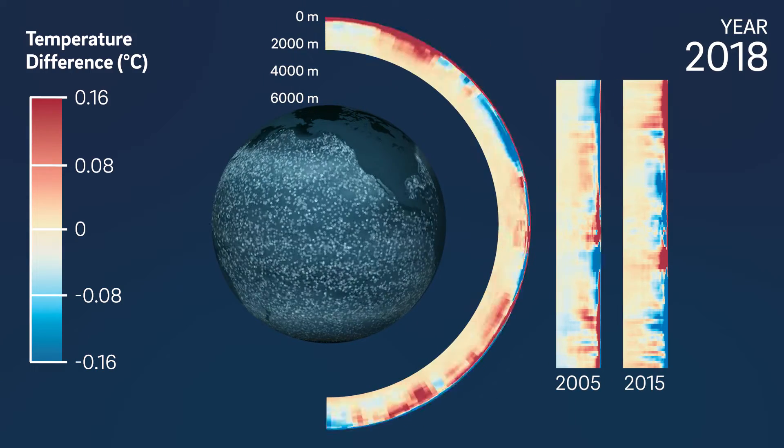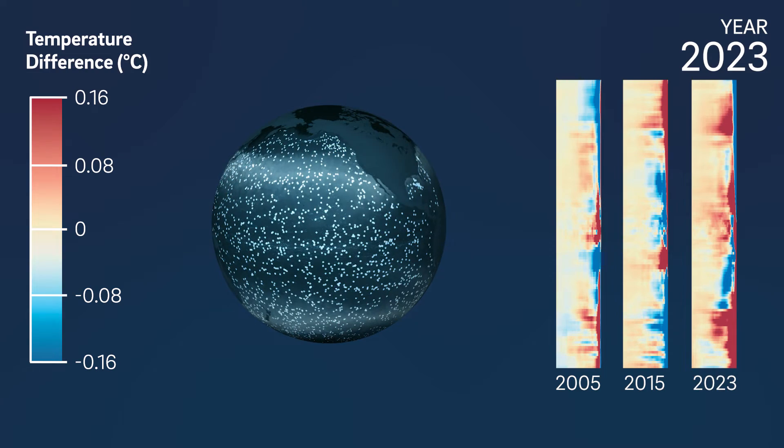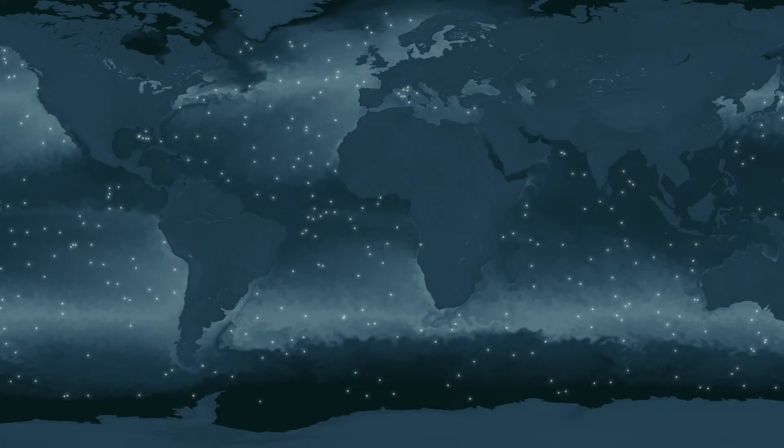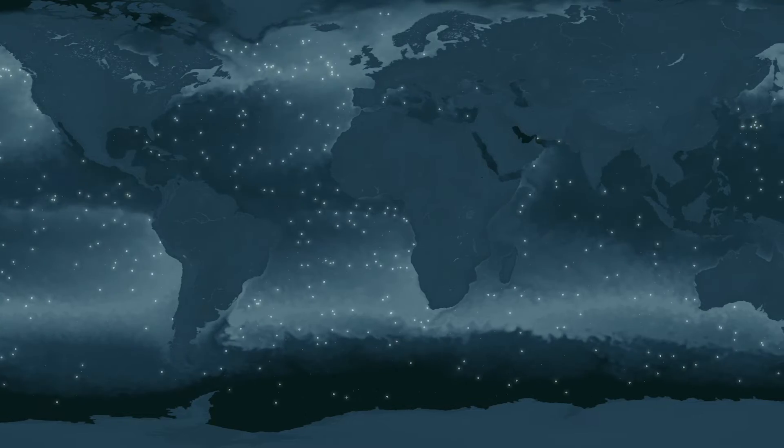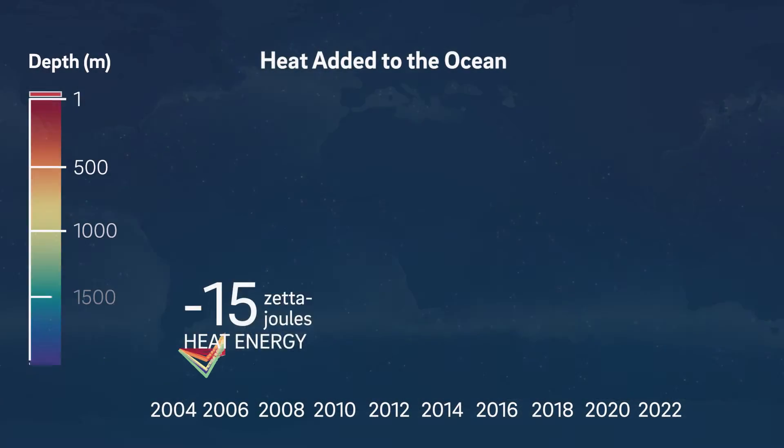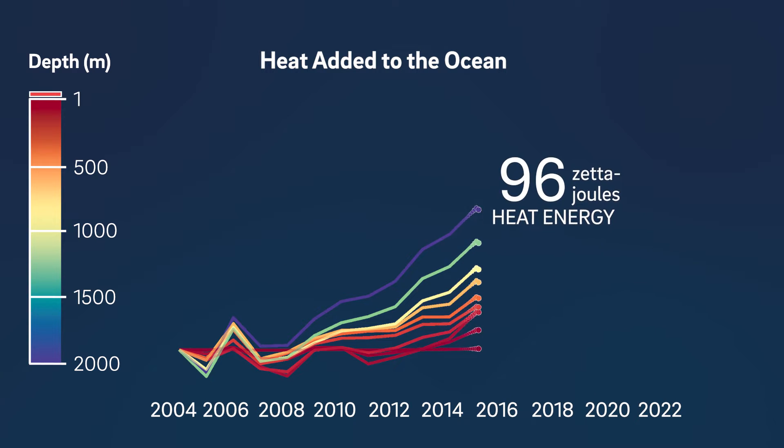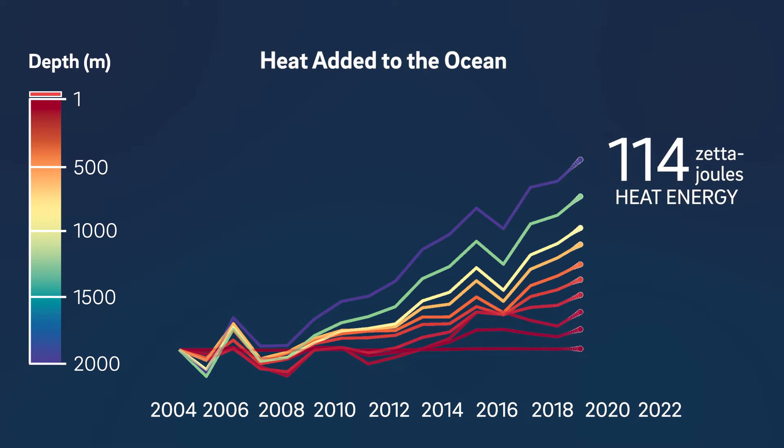As our planet's temperature rises, the ocean is absorbing 90% of that heat. Roughly 4,000 Argo floats are making the extent of the ocean warming clear, revealing that the ocean has absorbed heat energy at a rate equivalent to five atomic bombs exploding every second since 2000.